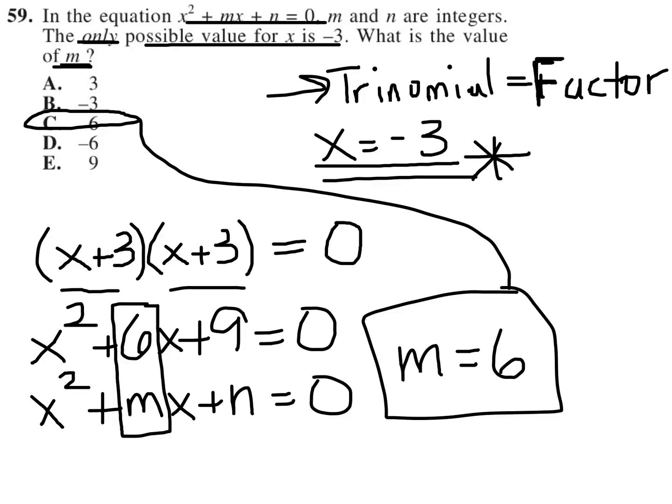We understand that because the only possible x value is negative 3, that means that the only way in which the trinomial could be factored is if you have x plus 3 times x plus 3. That's really the only way to factor it because negative 3 is the only possible value of x.